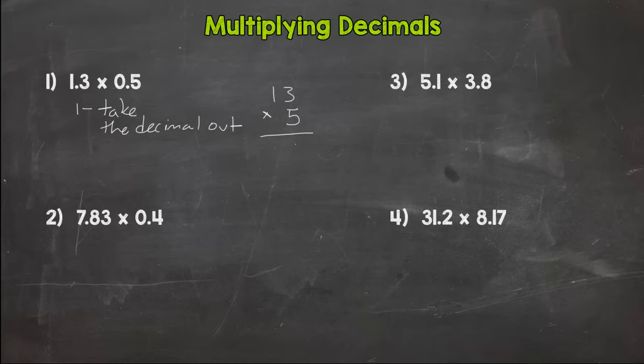5 times 3 is 15. 5 times 1 is 5, plus 1 is 6, and we get 65. Now our answer is not 65. Take a look at our original problem. 65 doesn't make sense for that problem.